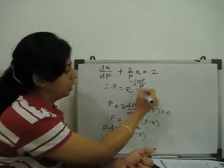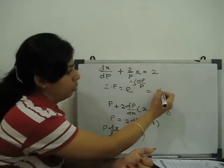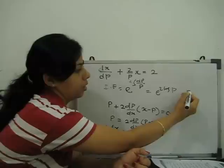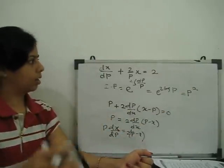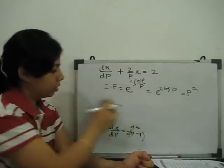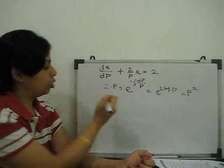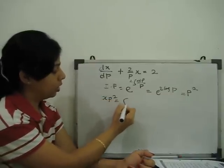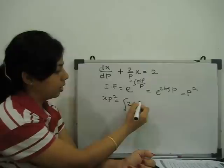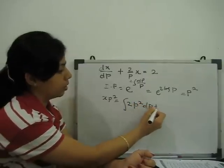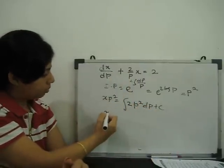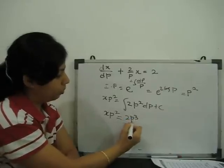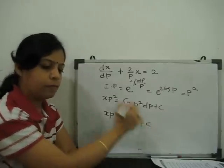So, this becomes e to the power 2 log p. Our integrating factor is becoming p square. So, if integrating factor is p square, we have to apply the solution. Solution is what? x into p square is equal to integration of q, integrating factor dp plus c. So, what becomes? x p square is equal to 2p cube by 3 plus c.